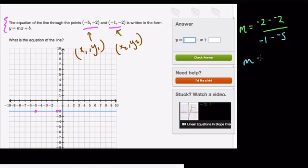And what's going to happen? Well, negative 2 minus negative 2 is 0, and negative 1 minus negative 5 is 4, but 0 over anything is just 0. So here the slope is 0.